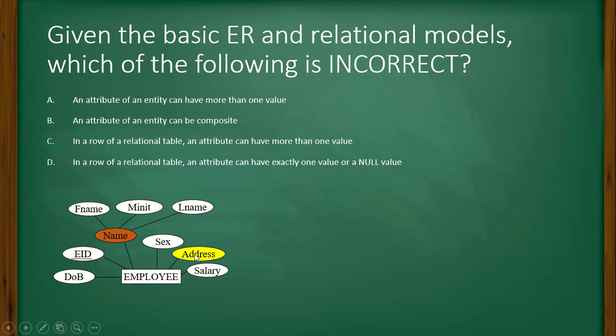And here address. And address may be multi-valued attribute. Why is it multi-valued? Because one employee may have multiple addresses.